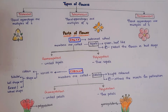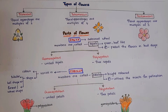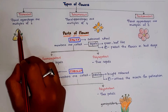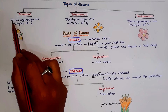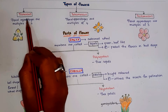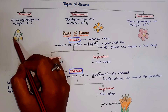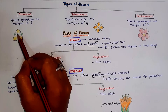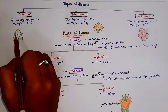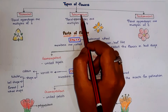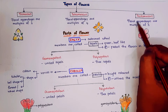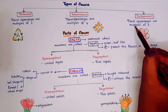Next, coming to the types of flowers. It is of three types: trimerous, tetramerous, and pentamerous. In trimerous, the floral appendages — calyx, corolla, androecium, and gynoecium — are present in multiples of three. In tetramerous, floral appendages are present in multiples of four. In pentamerous, the floral appendages are present in multiples of five.